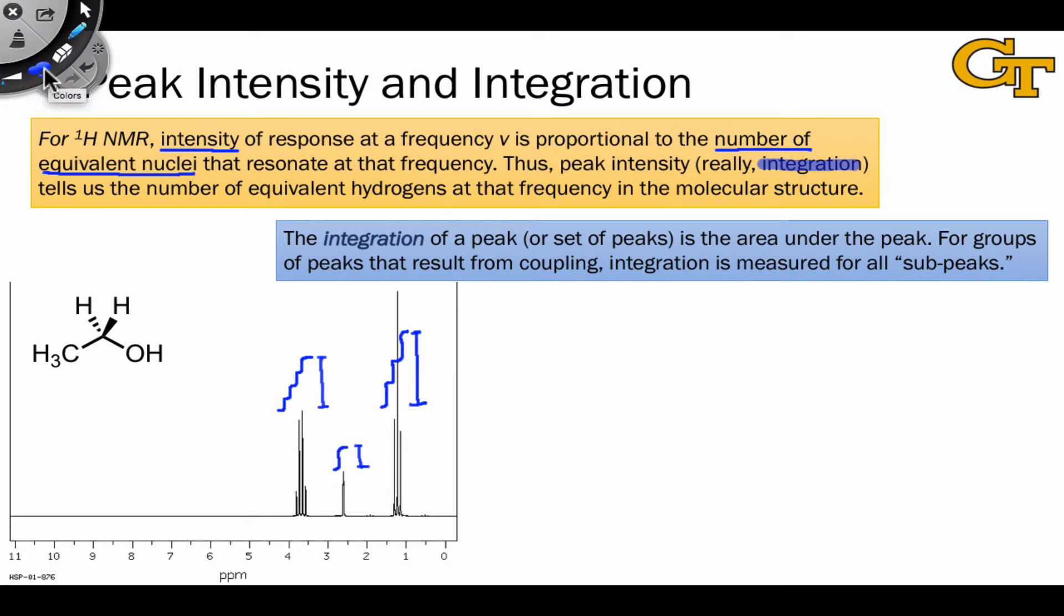The computer that processes the NMR spectra will automatically calculate the heights of these S-shaped curves. And when it does for this particular example, we would come up with 1.0 here, 2.0 here, and 3.0 here. And these numbers correspond to the number of hydrogens that give that signal in the sample.